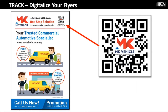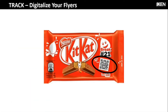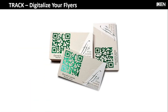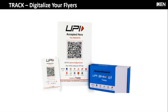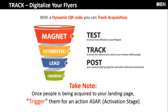There are many possibilities to maximize your acquisition. You can integrate this onto your flyer, your packaging, stationery, and sales kit. With a dynamic QR code, you can track acquisition. Once people are acquired to your landing page, trigger them for an action as soon as possible — this is what we call the activation stage.